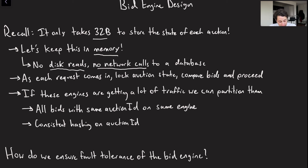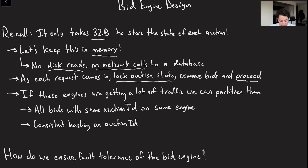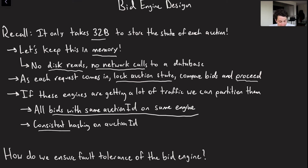As each request comes in, it grabs a lock on the auction state, checks if the bid is valid — basically just checking if the incoming price is sufficiently high — and returns the result to the user. If one bidding engine gets too much traffic, we can partition by auction ID using consistent hashing so all bids for the same auction go to the same server.